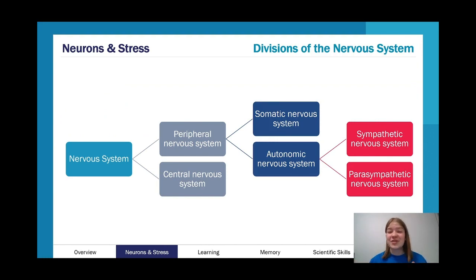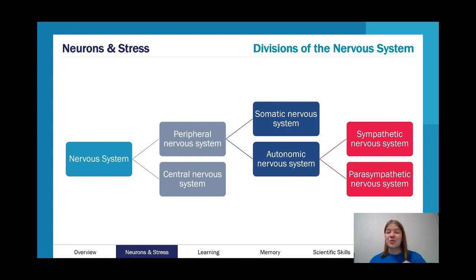First, we have the Divisions of the Nervous System. This is a classic — it's been in previous study designs for ages. We know the nervous system is divided into the central and peripheral nervous systems, and then the peripheral nervous system is divided into the somatic nervous system and autonomic nervous system. Students often remember that the somatic nervous system controls skeletal muscle movements — voluntary motions — but forget its important role in gathering sensory information.